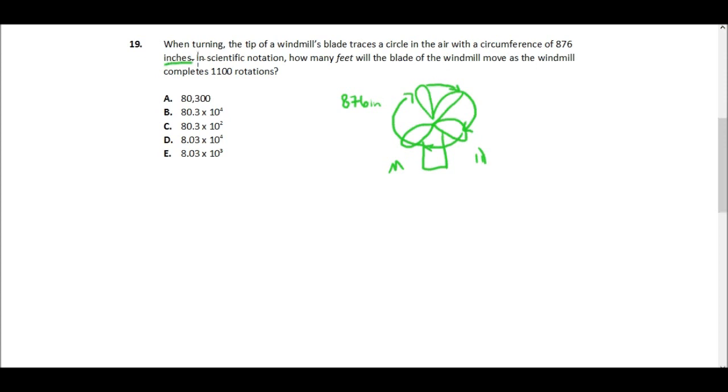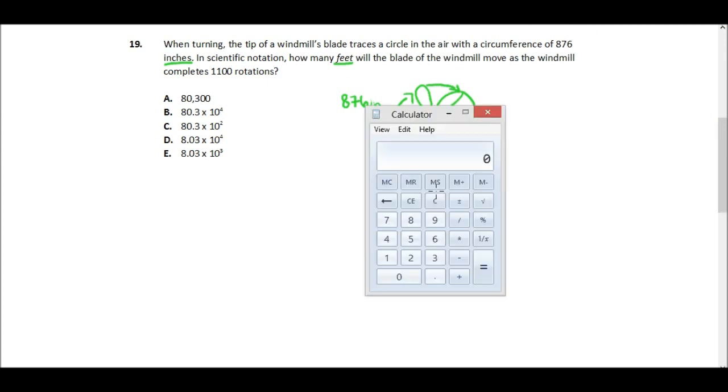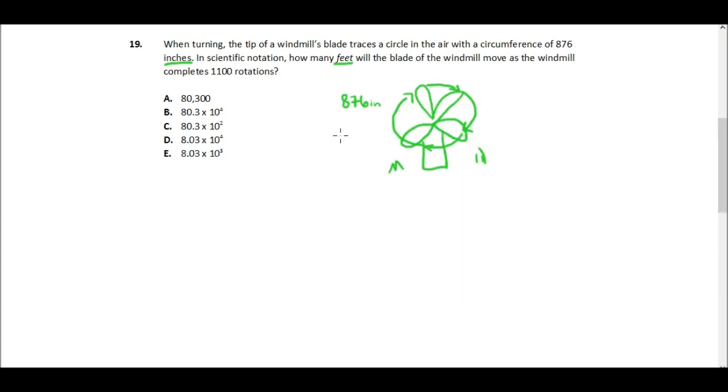But it gives us information in inches and asks for our answer in feet. So let's go ahead and divide that 876 by 12 inches to get feet, and that's 73 feet in circumference.